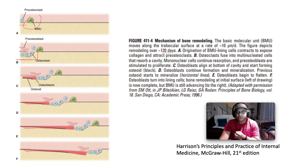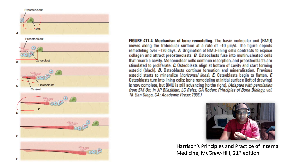Mononuclear cells continue resorption and pro-osteoblasts are stimulated to proliferate. In C, osteoblasts align at the bottom of the cavity and start forming osteoid — the organic bone matrix. In D, osteoblasts continue formation and mineralization; previous osteoid starts to mineralize. In E and F, osteoblasts flatten and turn into lining cells. Bone remodeling at the initial surface is now complete.